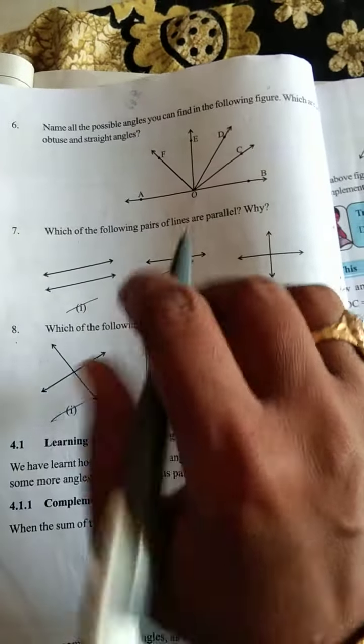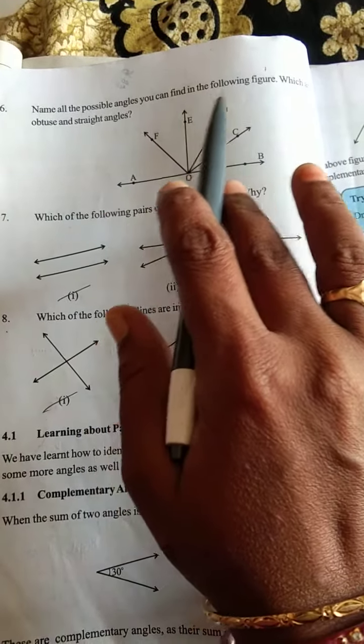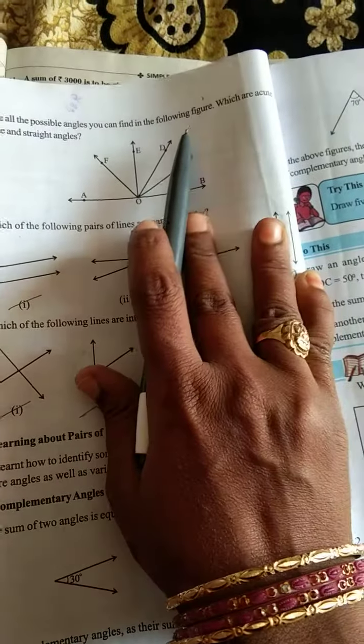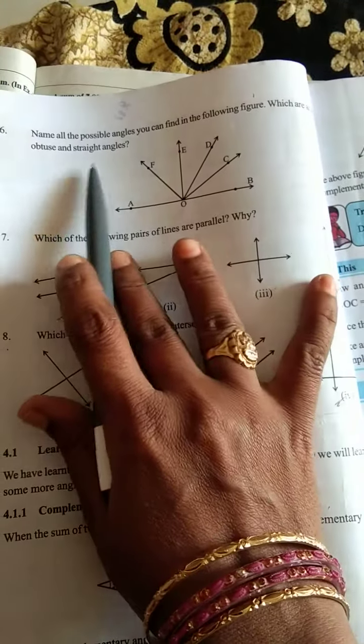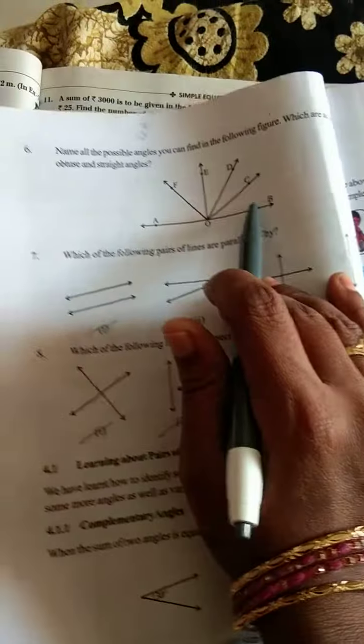Next to sixth question. Name all the possible angles you can find in the following figure, which are acute, obtuse and straight angles.